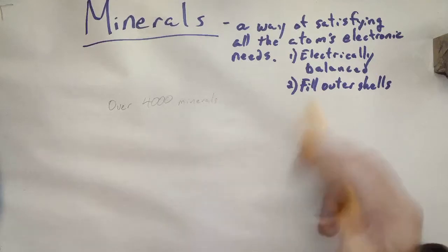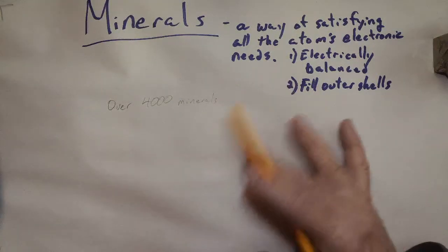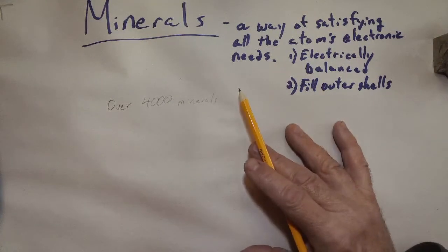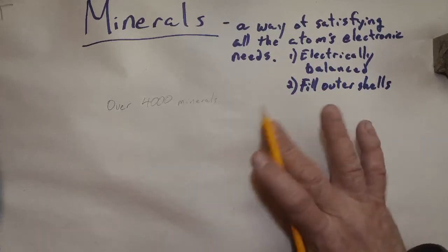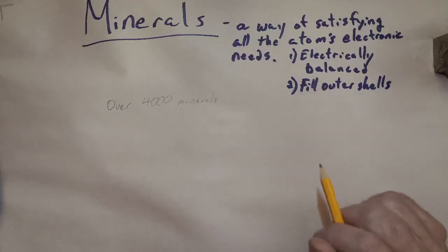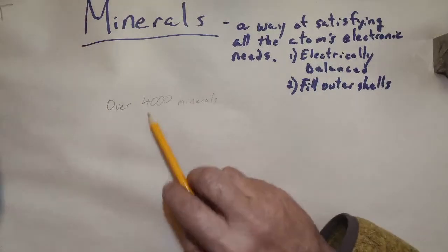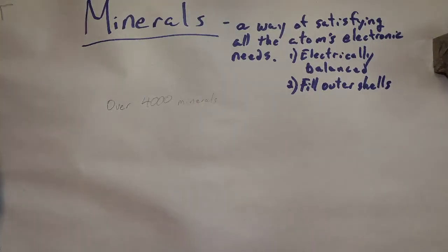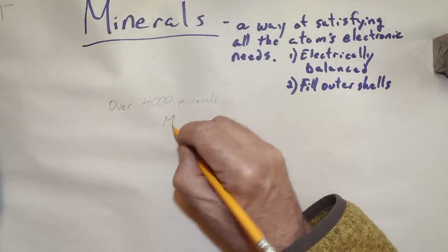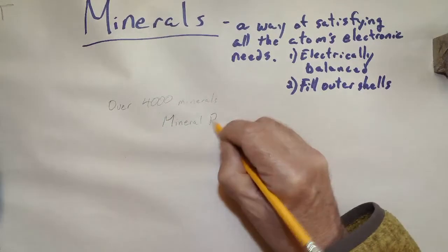So there are over 4,000 minerals. But like we talked about in class, you only really don't need to know about 12 to pick up and look at and understand what they are to seem like a positive genius when it comes to mineralogy and rocks. So you don't need the 4,000. About a dozen will be pretty good. How are you going to tell one mineral from another? And that comes down to mineral properties.